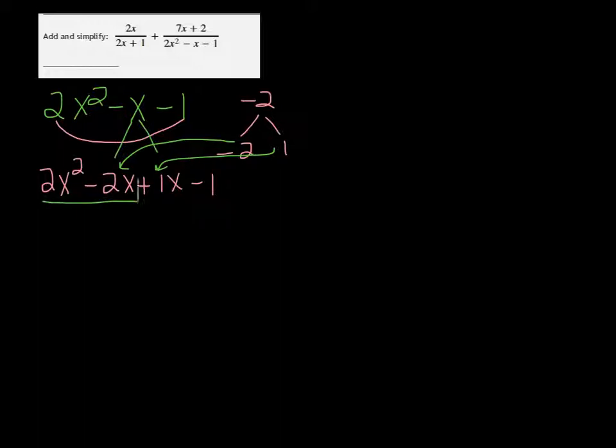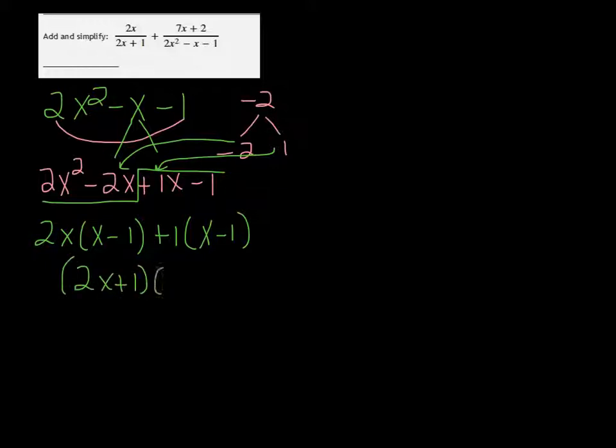You can factor it by grouping. Take out a 2x and you're left with x minus 1. And then we can just take a 1 out of the second one and we're left with x minus 1. So our factors are 2x plus 1 and x minus 1.